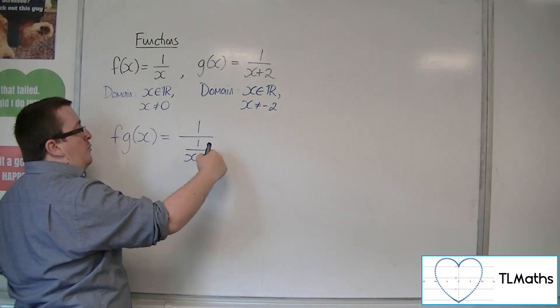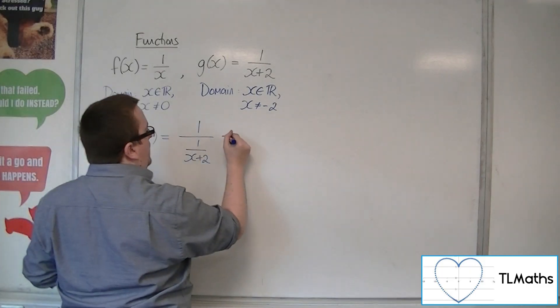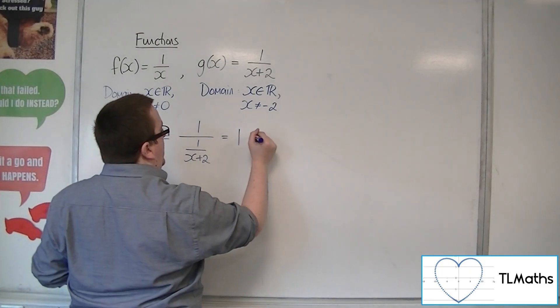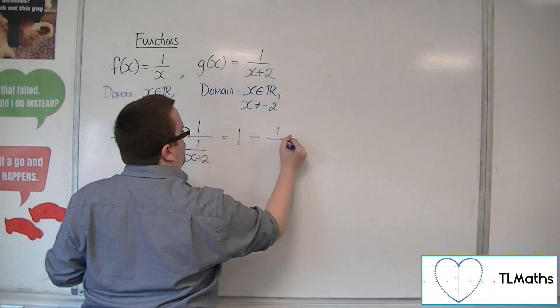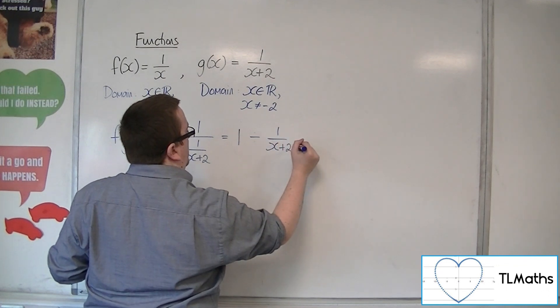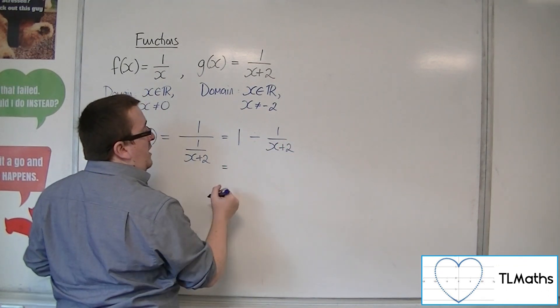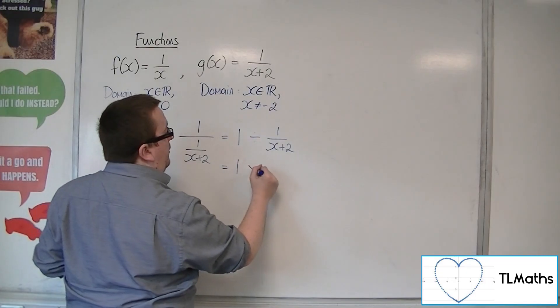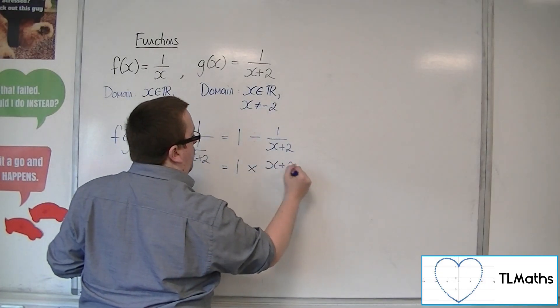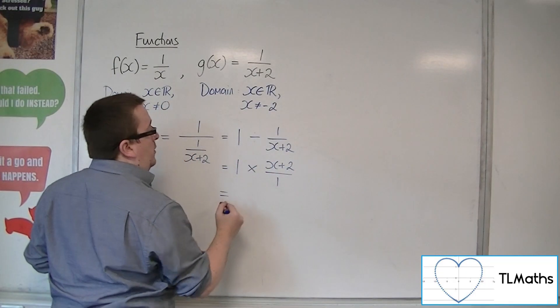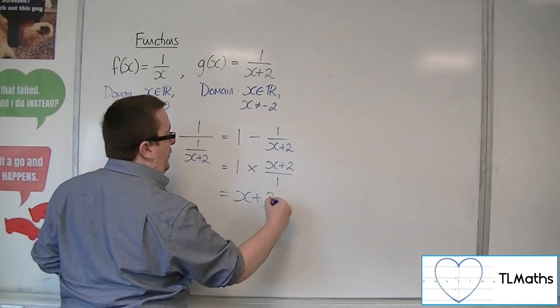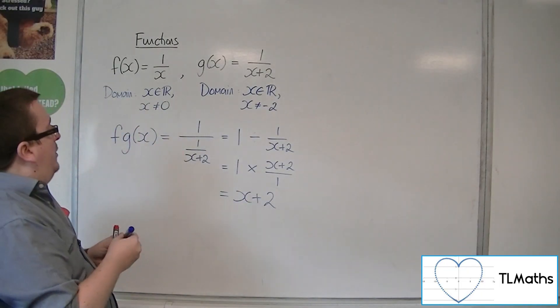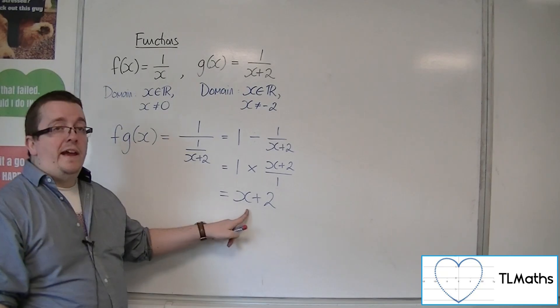Now, 1 over 1 over x plus 2 is 1 being divided by 1 over x plus 2, and 1 divided by 1 over x plus 2 is the same as 1 times x plus 2 over 1. So we just get left with x plus 2. So f g of x is just x plus 2.